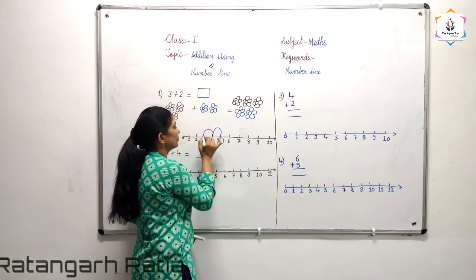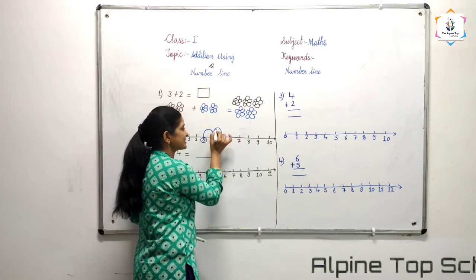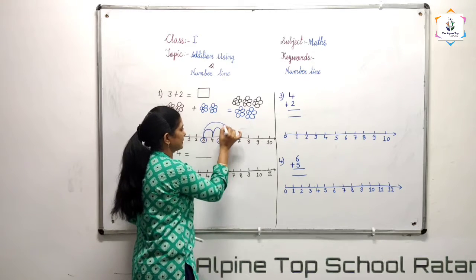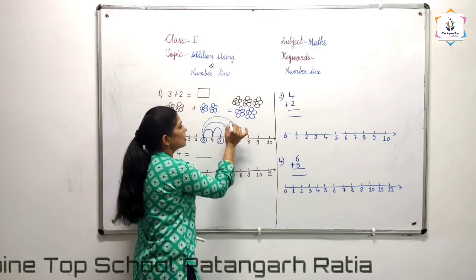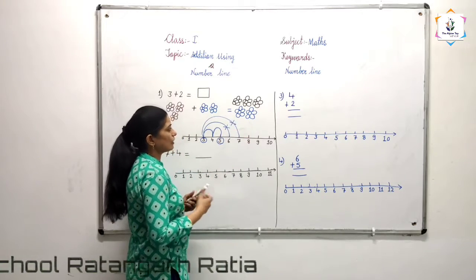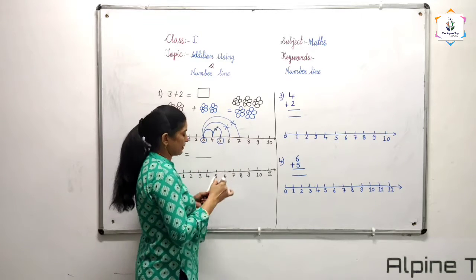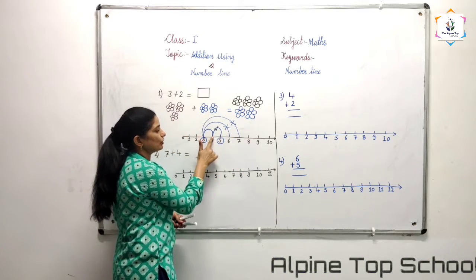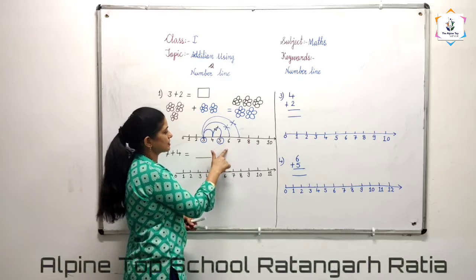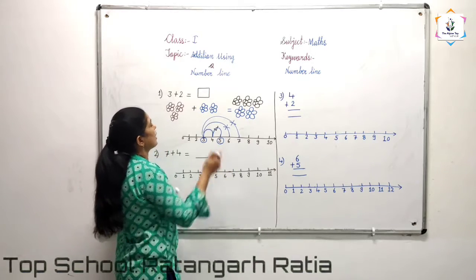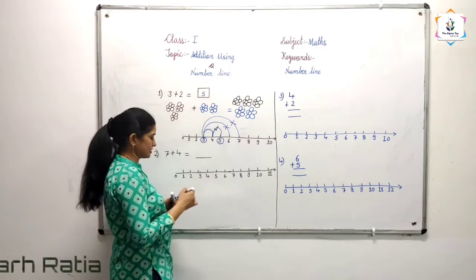We have to move to the next number only. Don't move like this or like this — these are the wrong method. We have to move 1 step at a time. This is the right answer. The answer is 5. So now I have 5 flowers.